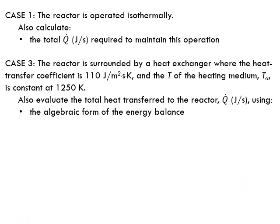We also evaluate the total heat transferred to the reactor, Q-dot total. Using the algebraic form of the energy balance — discussed at the beginning of this example — we apply the algebraic equation. This time T does not equal T-naught, so you cannot cancel out the first term. The values show how much heat is transferred to the reactor, and it is more than in the isothermal case — that explains why the temperature shot up.